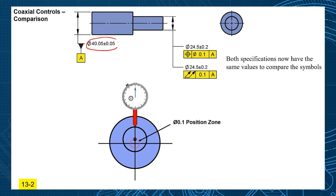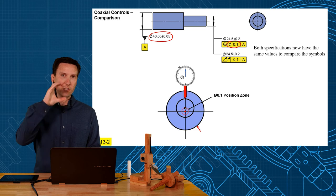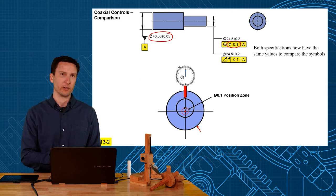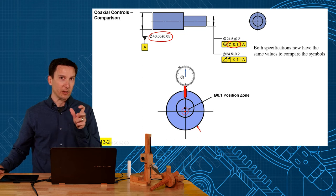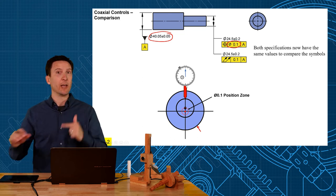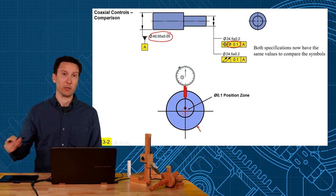So in this example, I have our datum axis A as the center of the larger diameter. And then we have this exaggerated position zone of 0.1 centered on there. So the smaller feature's axis is shifted 0.05 right on the edge of that 0.1 tolerance zone. Now I'm going to register our indicator on the top here and register that as zero. And now we're going to rotate the part and see how much run-out we get.